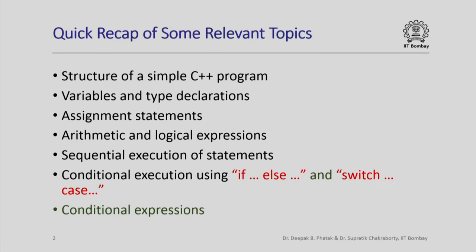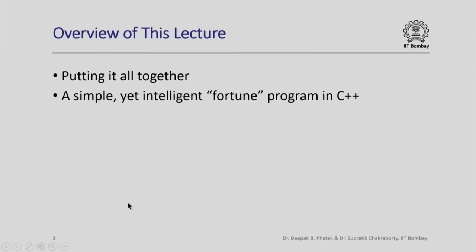Here is a quick recap of some of the various features that we have learnt so far in the structure of a simple C++ program. We have looked at variables and type declarations, assignment statements with arithmetic and logical expressions, sequential execution of statements, conditional execution using both if-else statements and switch-case statements, and conditional expressions. In this lecture we will try to put all of this together to write a simple yet intelligent version of the fortune program that we already saw in a previous lecture.